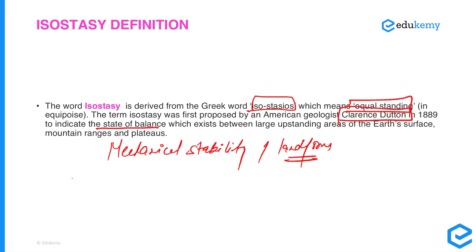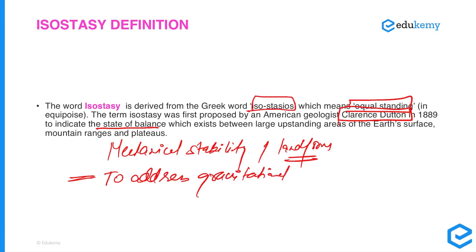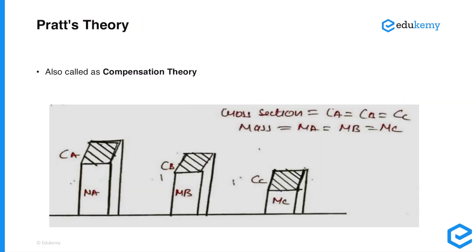Isostasy is basically used to address the gravitational anomaly. There are three particular theories related to isostasy. The first is Pratt's theory, also called the compensation theory.